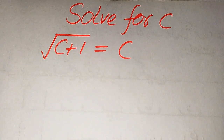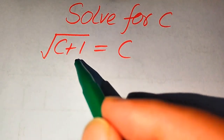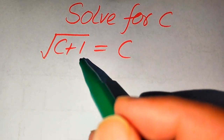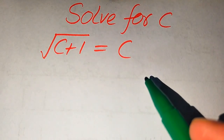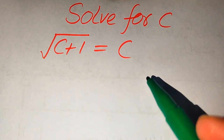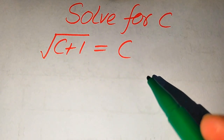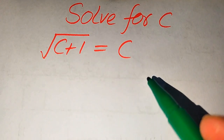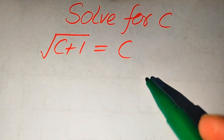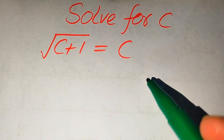Hello everyone. How to solve this problem for the values of c, if we have square root of c plus 1 equals c, and we solve this problem for all the values of c. First we find all the roots of this equation, and at the end we will verify which of the roots are solutions and which of the roots are extraneous roots.